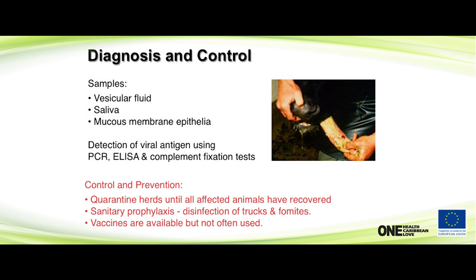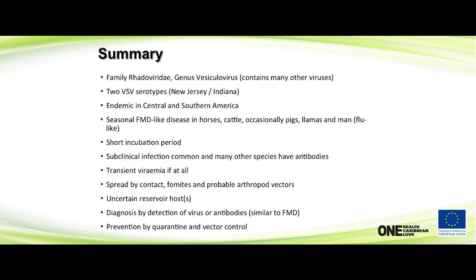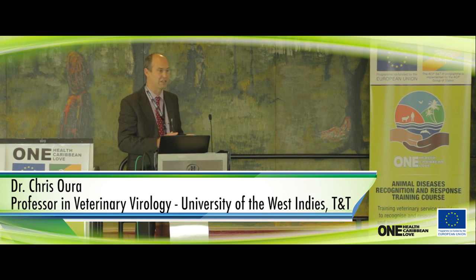For control and prevention, we look at quarantining herds until all infected animals have recovered, and disinfection of trucks and fomites, as vesicular stomatitis is susceptible to quite a lot of disinfectants. Vaccines are available but not usually used. That was a quick run-through of vesicular stomatitis — a virus and disease we have to be thinking about in the Caribbean when looking at these types of lesions, because it can't be differentiated easily from foot and mouth disease.